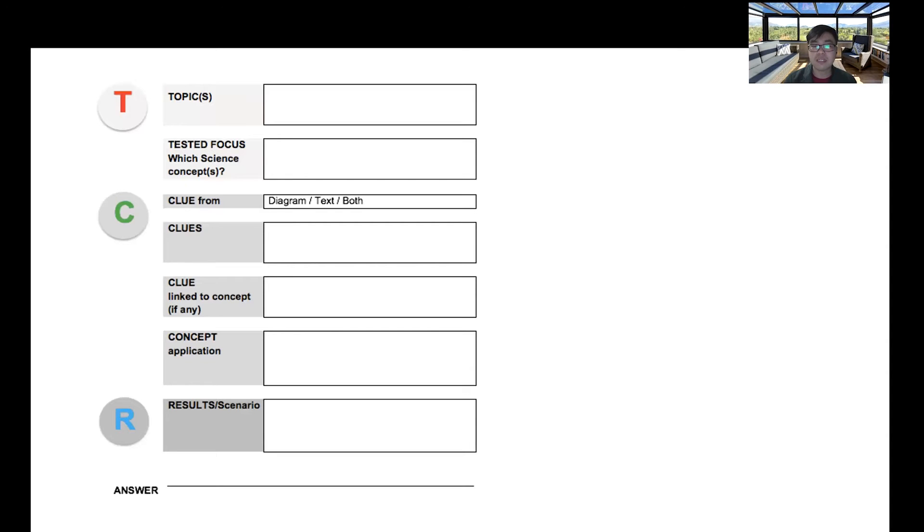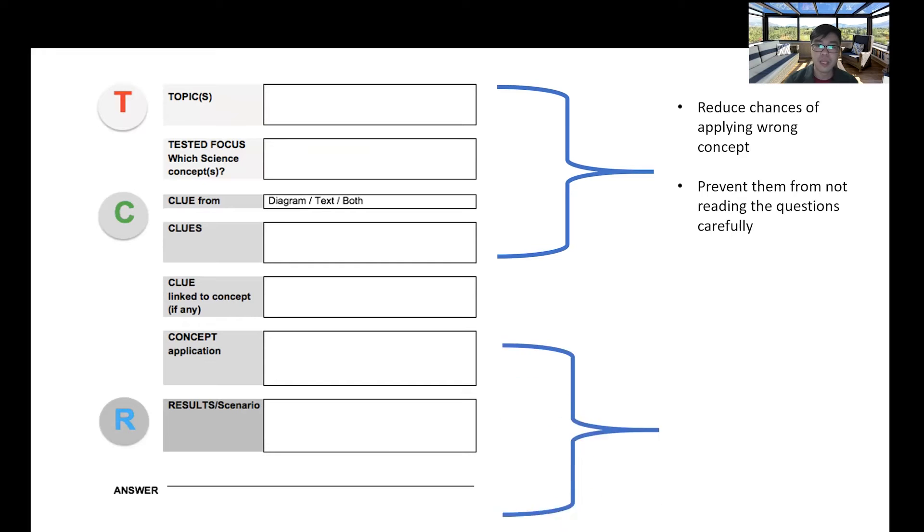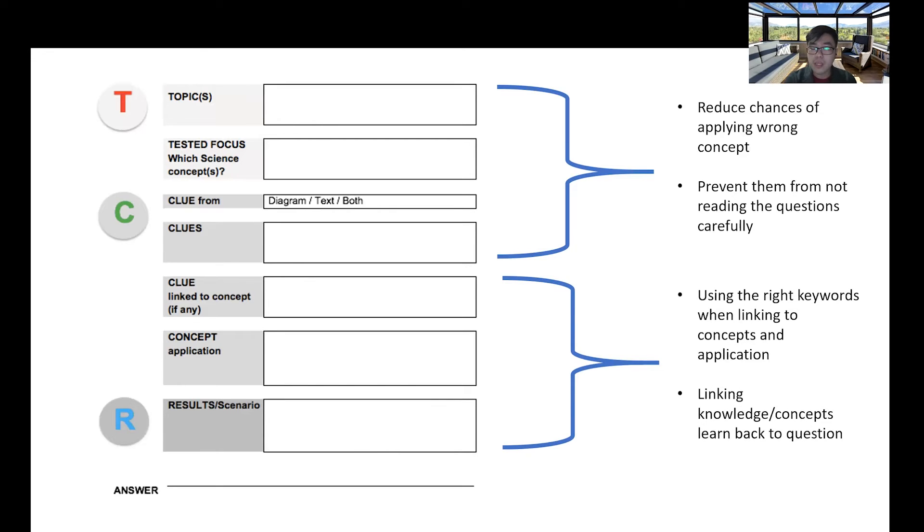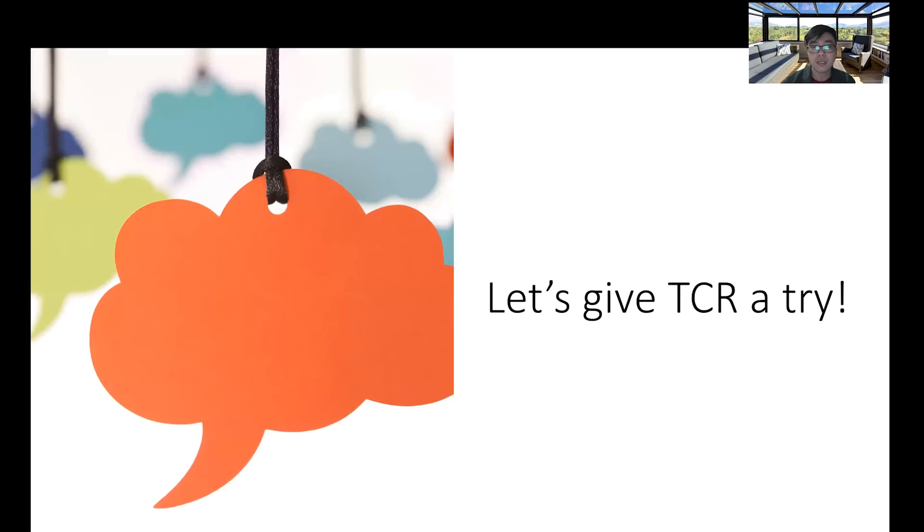When we look at the TCR answering technique itself, the first part - having the topic and looking for clues - actually helps to reduce chances of applying the wrong concept. It also prevents them from not reading the question carefully. While the second part - concept application and results - what we do is use the correct keywords when you apply the concept and link it back to having the right keywords to link to the concept and apply it to the questions that we are answering. This is always linking back to the question and to the results itself.